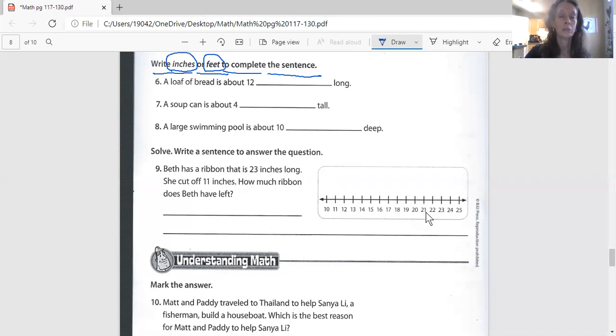And number seven. A soup can is about four blank tall. Four inches tall or four feet tall. Write it in there. And the next one wants to know. It says a large swimming pool is about 10 blank deep. 10 inches deep or 10 feet deep. It's a large swimming pool. 10 inches or feet. You think a swimming pool is 10 inches? Write inches here. You think it's 10 feet? Write feet here.